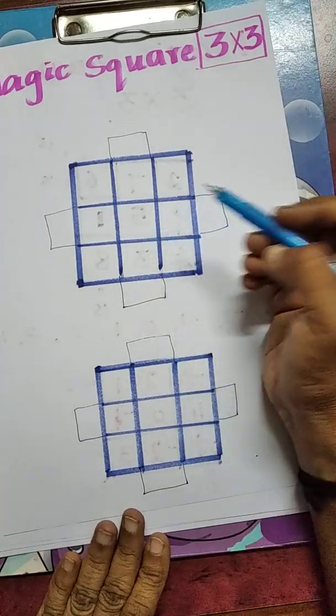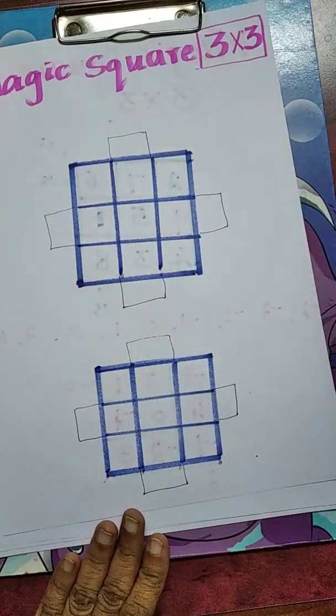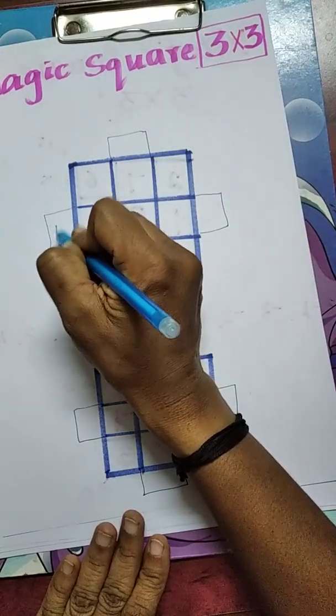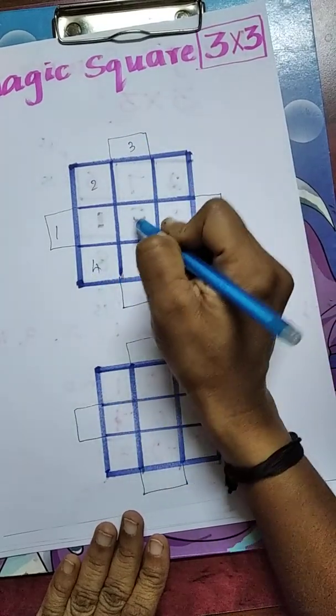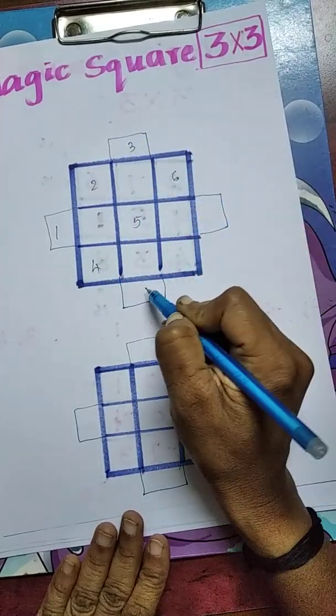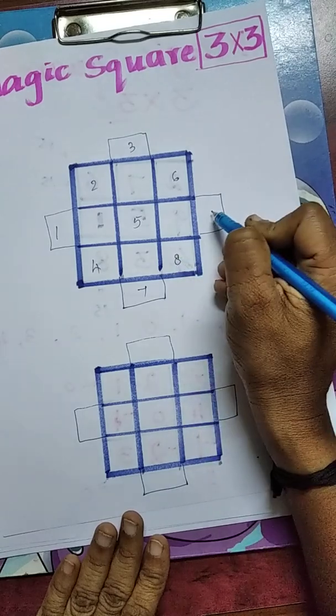First step, we have to fill the numbers diagonally: 1, 2, 3, 4, 5, 6, 7, 8, 9.